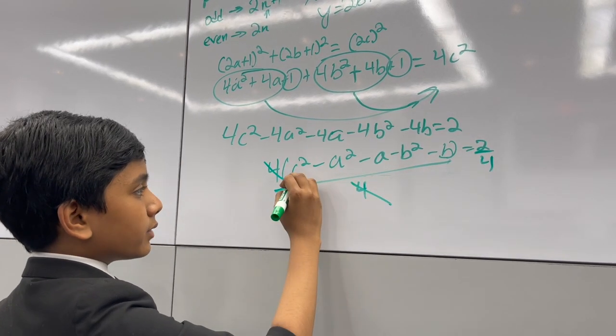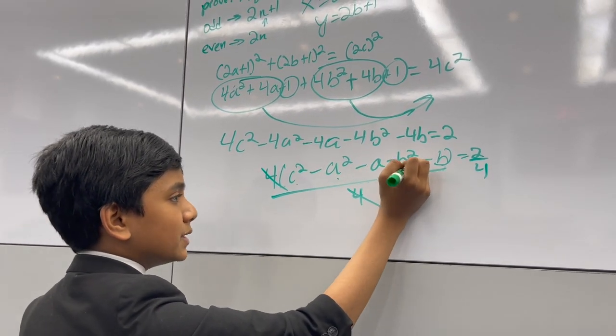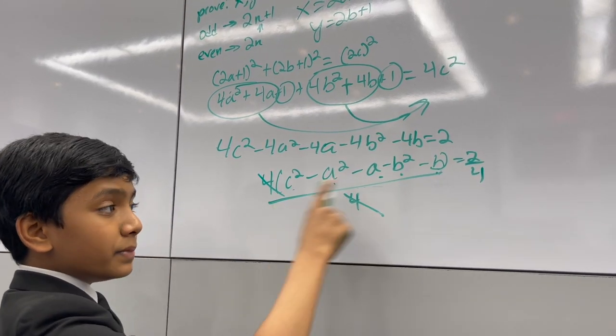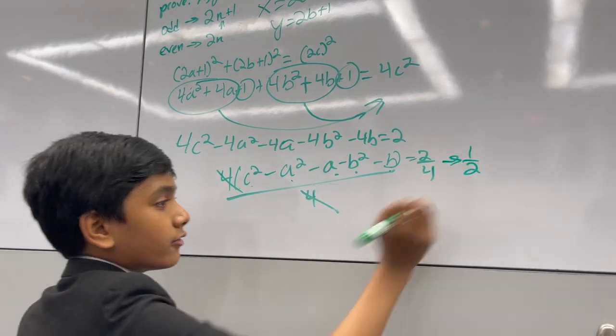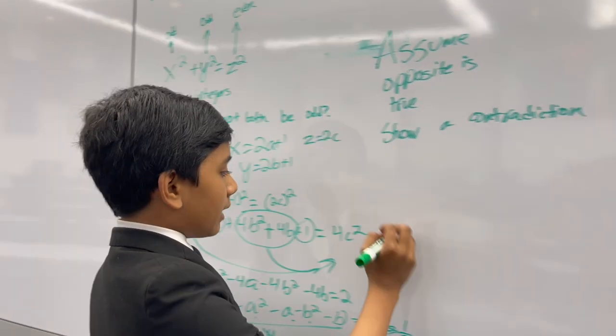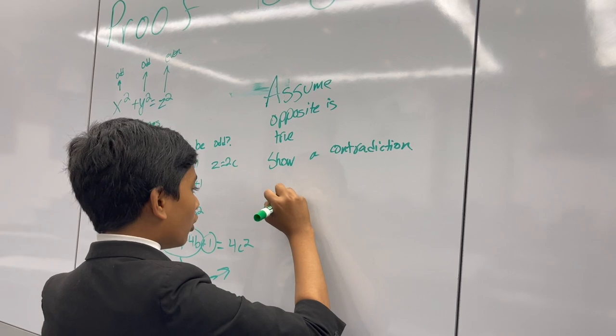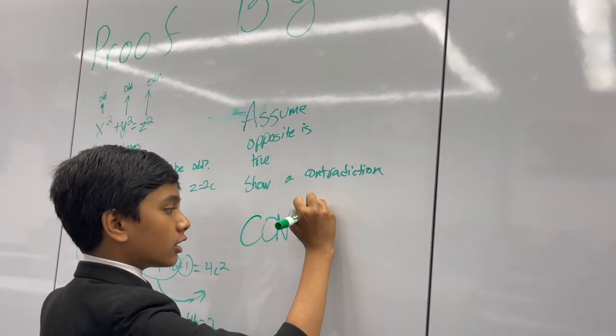It gives us c squared minus a squared minus a minus b squared minus b, which should be an integer, equals 2 over 4, which is 1 half. But 1 half isn't an integer, so that means that this must be false, because we have found a contradiction.